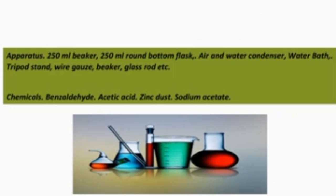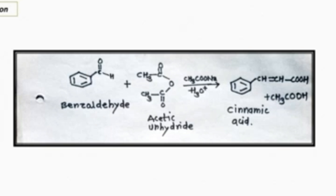The apparatus required to complete these experiments are: 250 ml beaker, 250 ml round bottom flask, air and water condenser, water bath, tripod stand, wire gauge, beaker, glass rod, etc. The chemicals are benzaldehyde, acetic acid, zinc dust, and sodium acetate.